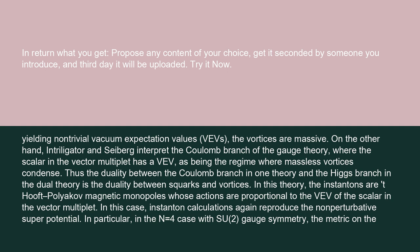On the other hand, Intriligator and Seiberg interpret the Coulomb branch of the gauge theory, where the scalar in the vector multiplet has a VEV, as being the regime where massless vortices condense. Thus, the duality between the Coulomb branch in one theory and the Higgs branch in the dual theory is the duality between squarks and vortices.